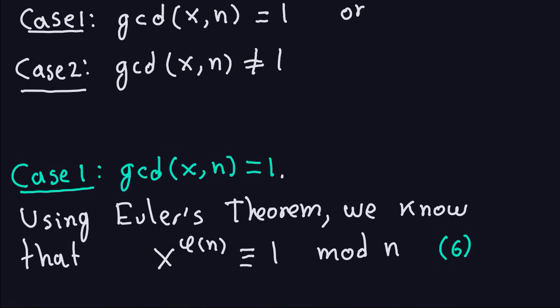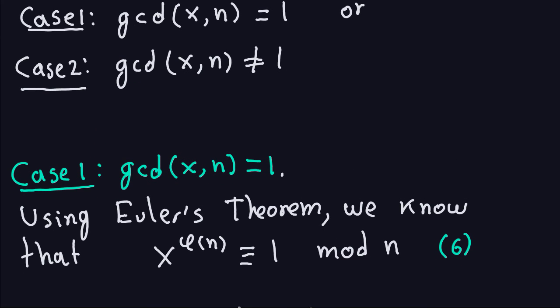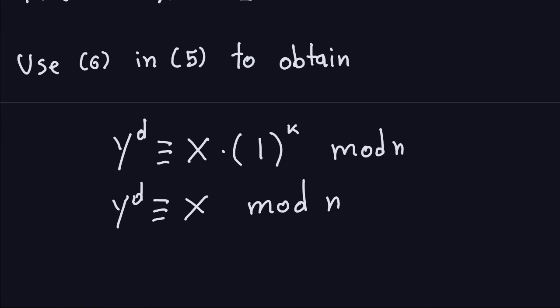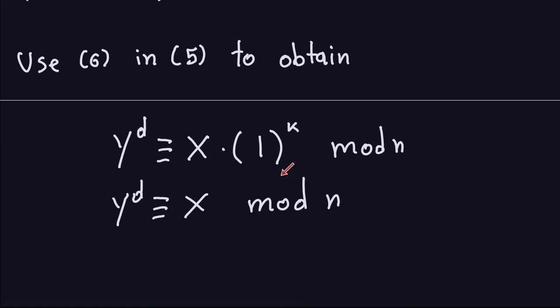This is the proof only under Case 1, where GCD between X and N equals 1. The other case, where the GCD is not equal to 1, still yields the same conclusion, but the argument is a little different. I'm going to stop the video here, and in the next video I'll discuss the same goal but with the proof going a different way. See you in the next video.